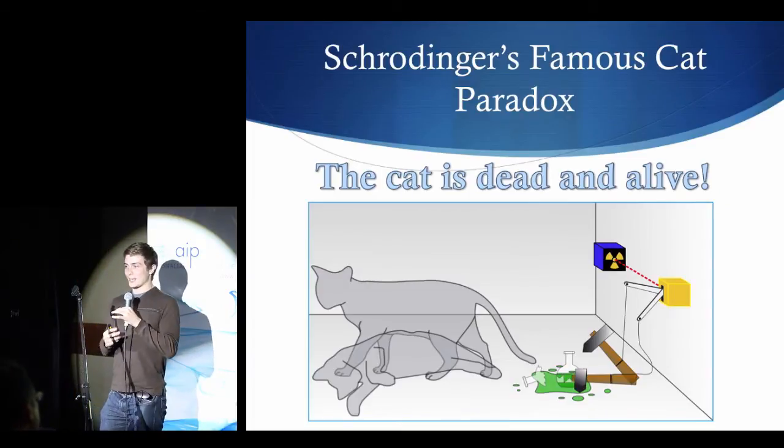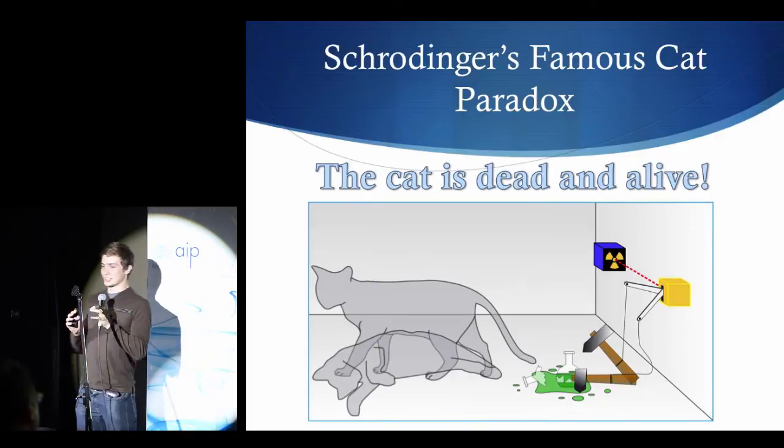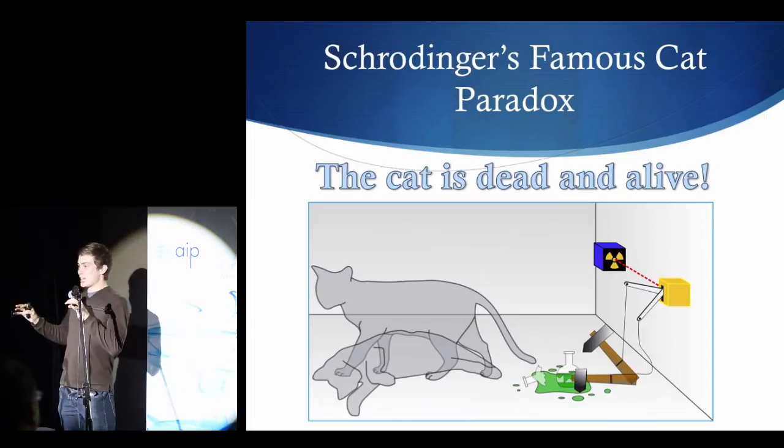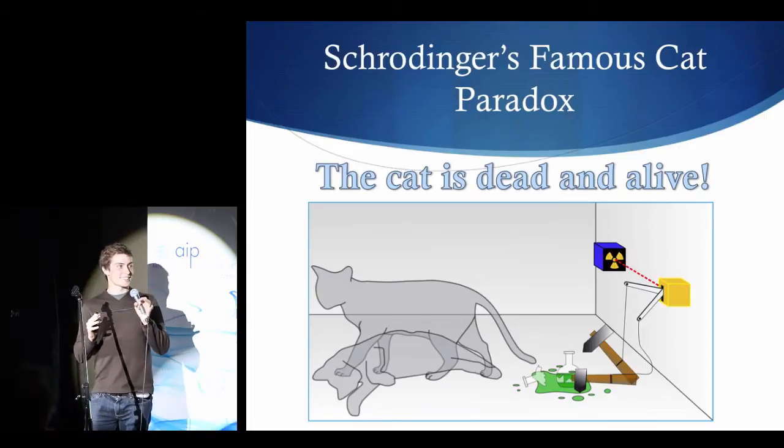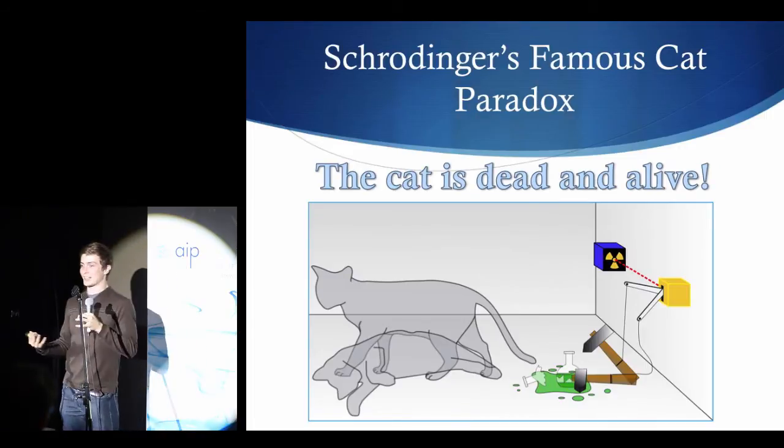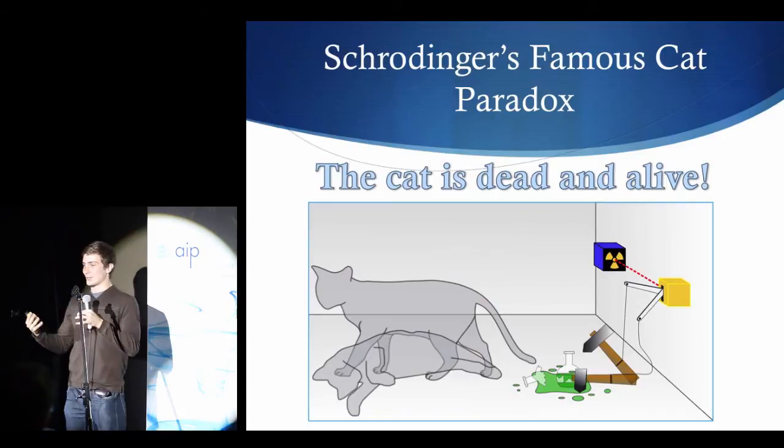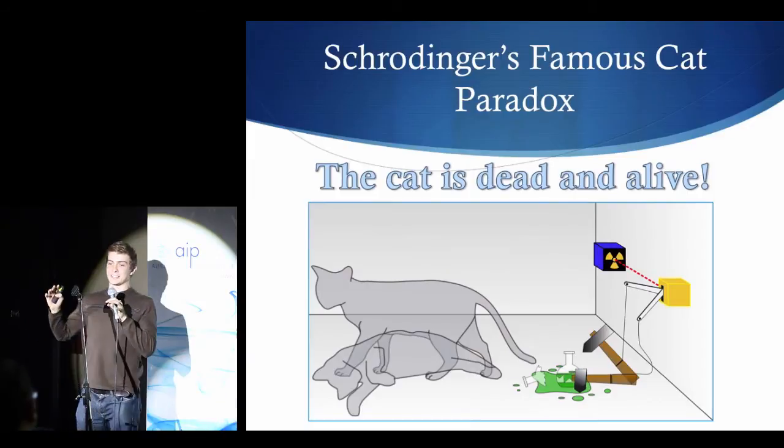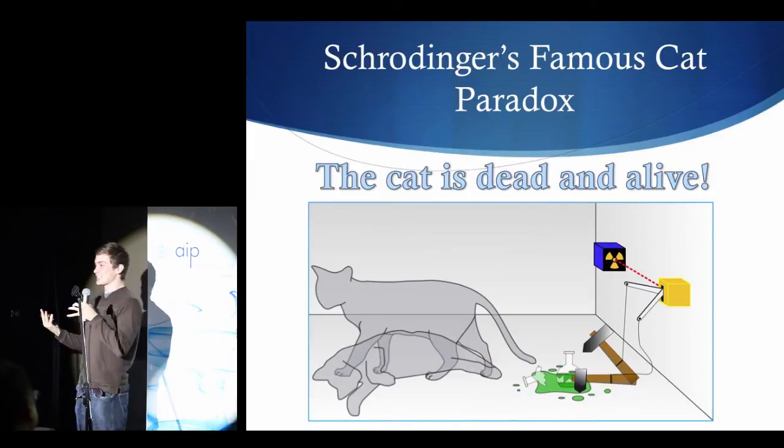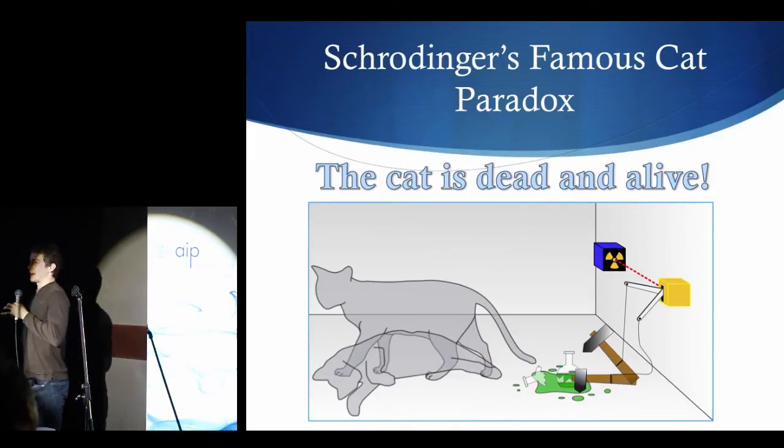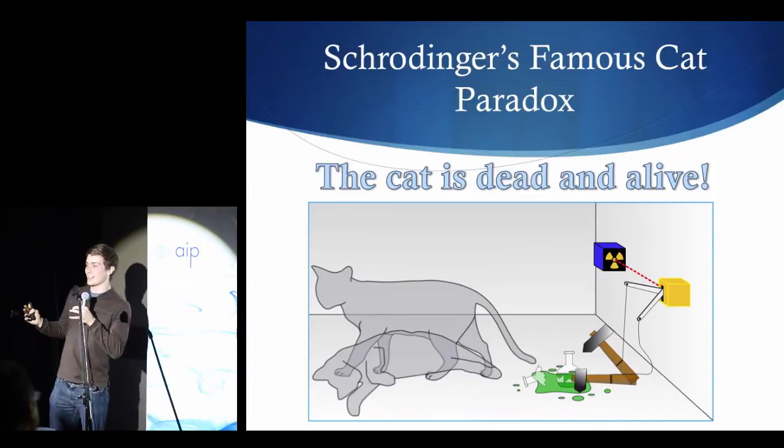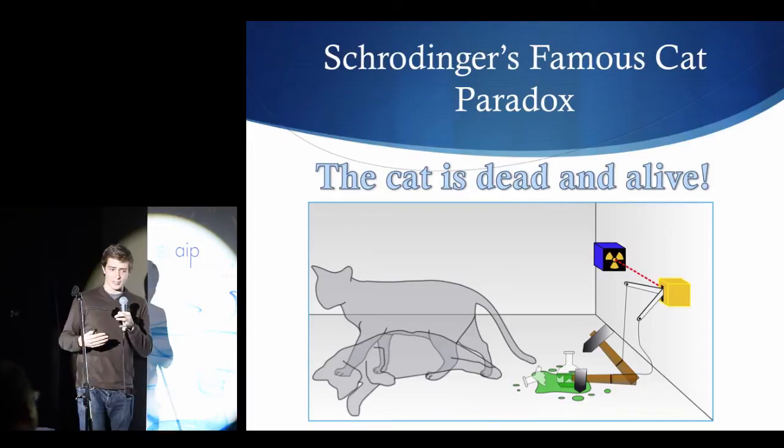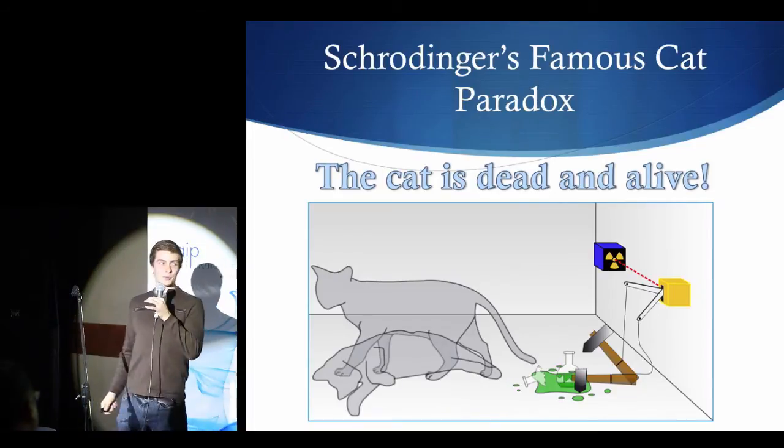Now, another way you could see this experiment, which is pretty cool, is imagine you separate the atom and the cat in separate boxes, but you set it up in such a way that the cat dies if the atom decays and vice versa. And you can separate these boxes across the universe, even, and since these two things are entangled, you can open the box in one place or the other and instantly know the state of the other, no matter how far away you are, which is pretty bizarre as well.